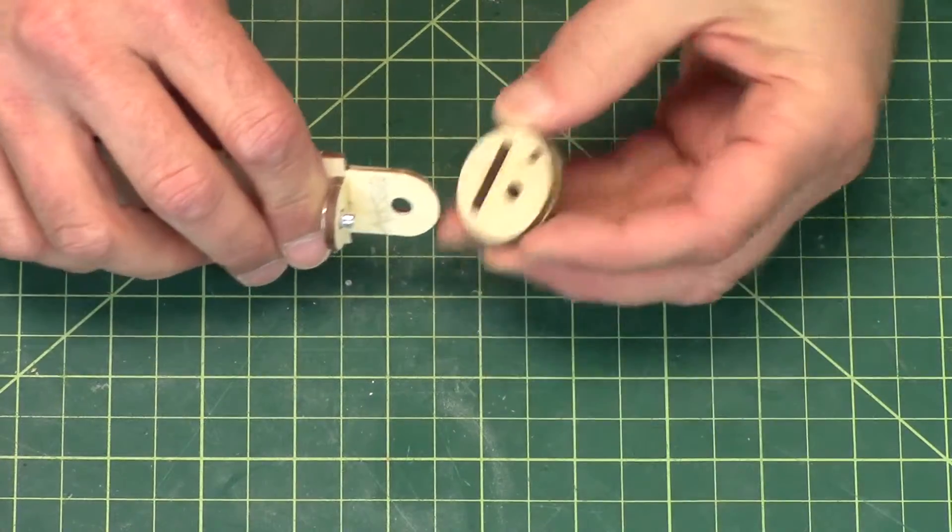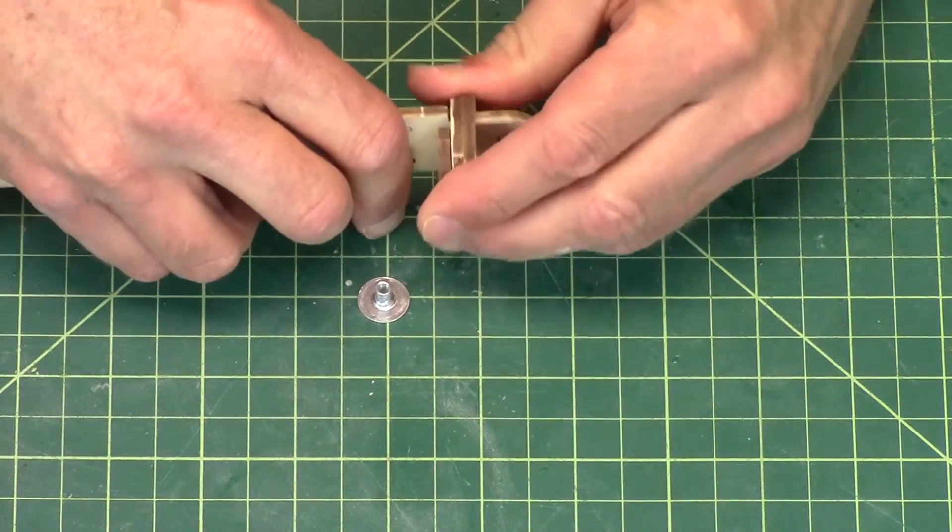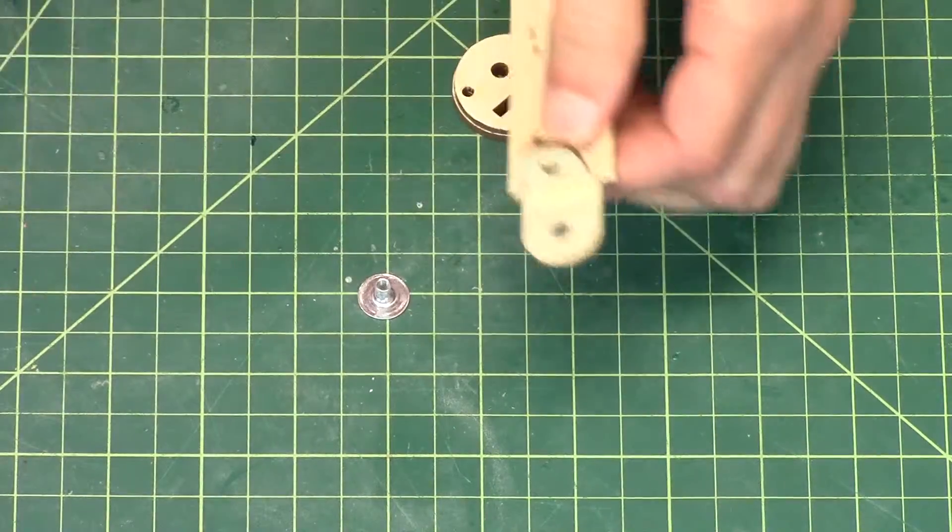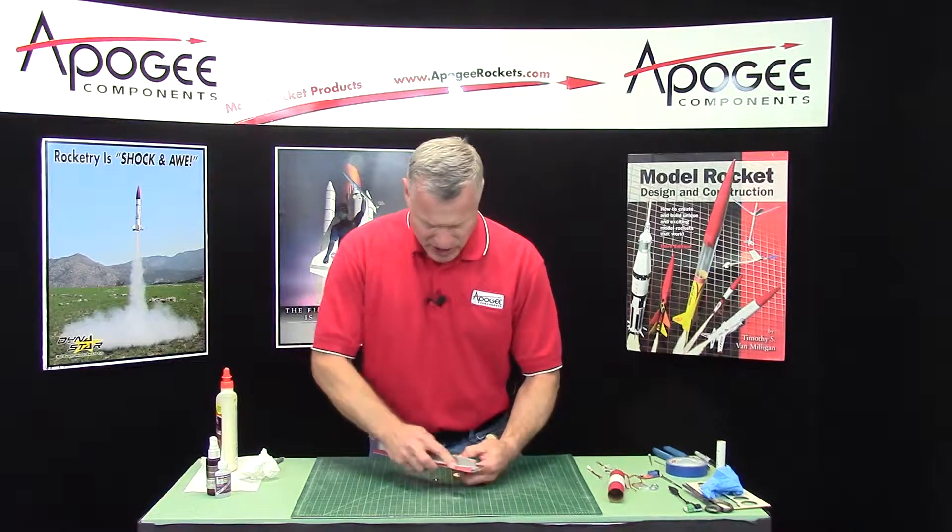Test fit this disc, the A1, A2 disc onto the board. Mine got a little bit tight there, probably because there's a thin film of glue on there. I'm just going to sand that off real quick.